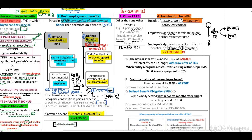We may only recognize the liability and expense at the earlier of: one, when the entity can no longer withdraw the offer of termination benefits, or two, when the entity recognizes costs relating to a restructuring within the scope of IAS 37 and invoices have been paid.